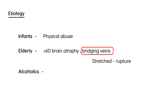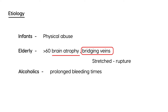Alcoholics, unfortunately, because of poor nutrition and alcohol misuse, can have prolonged bleeding times, which can lead to this disastrous effect. Alcoholics can also have brain atrophy, and that cerebral atrophy can lead to tension on the bridging veins in the same way as the elderly.